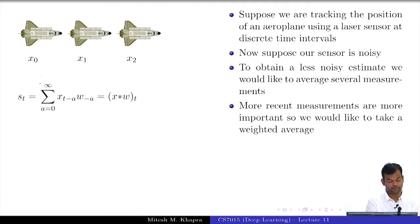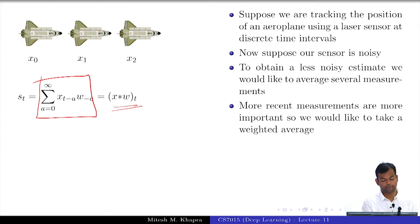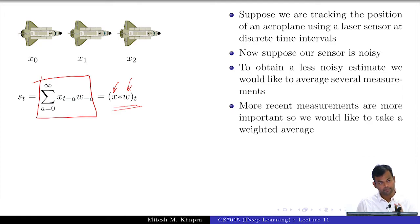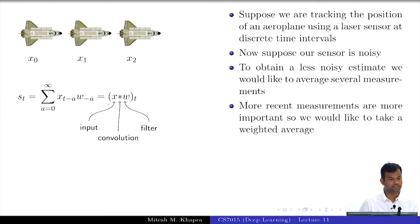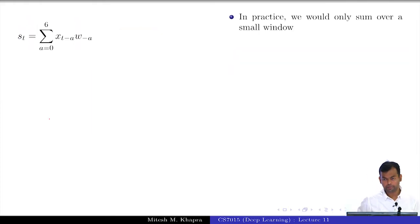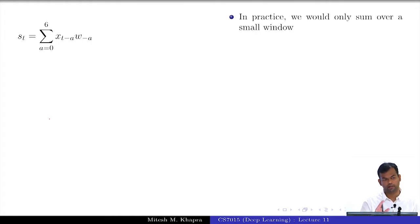This operation — where you have a vector of measurements x and an array of weights w, with smaller weights assigned to measurements farther from the current time step — is known as the convolution operation. Here x is the input and w is known as the filter. In practice you would not sum to infinity; you would keep a window, say relying only on the previous 6 measurements: t minus 1 through t minus 6 seconds. Beyond that it does not really make sense.